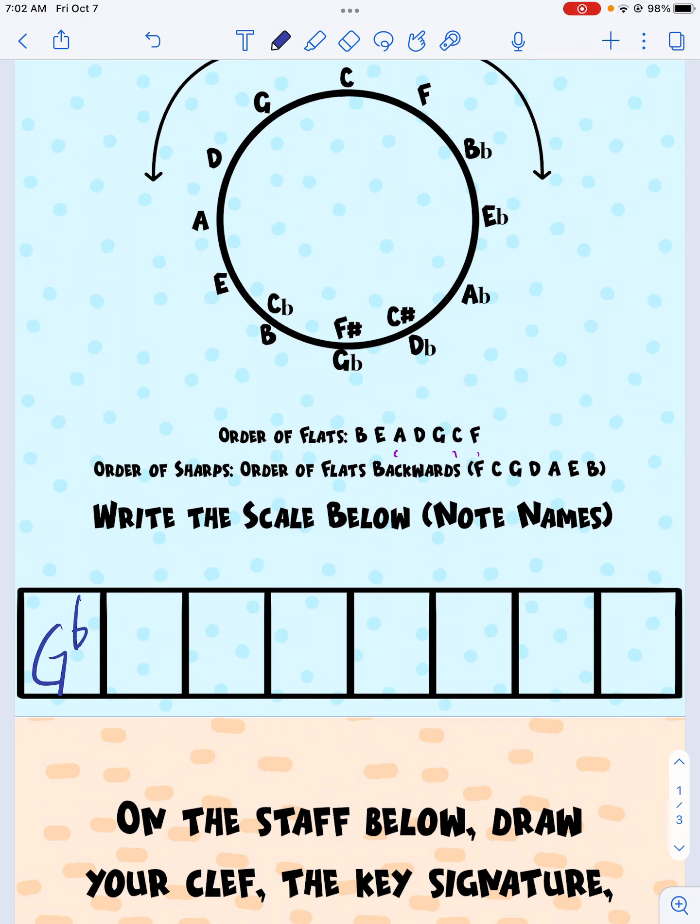Now we're going to write letter names in alphabetical order through these boxes. Since there's no H after G, we start over at A, B, C, D, until we get back to the letter we started with. So there's our letter names.